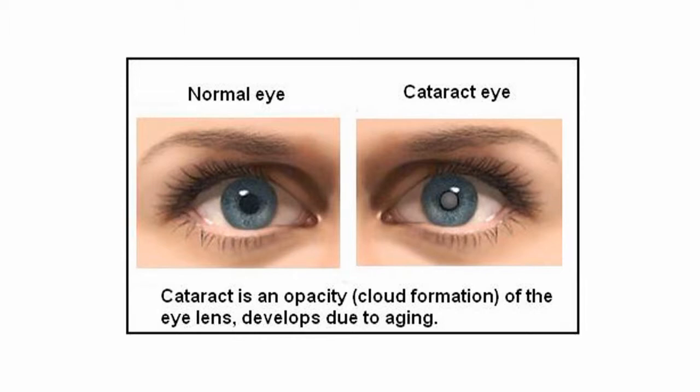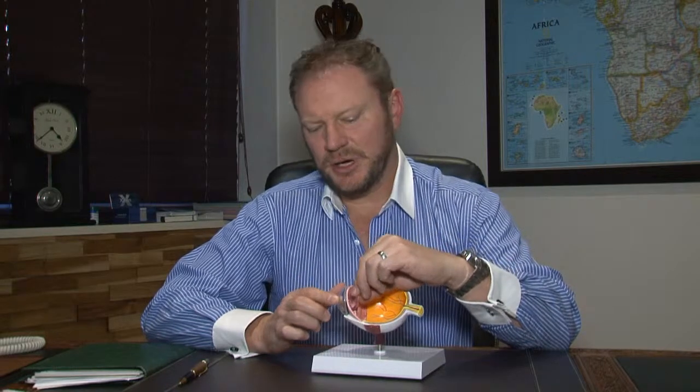What exactly is a cataract? If we have a look at the eye, when we're born we have a lens that occupies the space behind the pupil. The pupil is the hole in the iris, which is the colored part. Behind that is the natural lens, and that lens is clear typically when we're born.